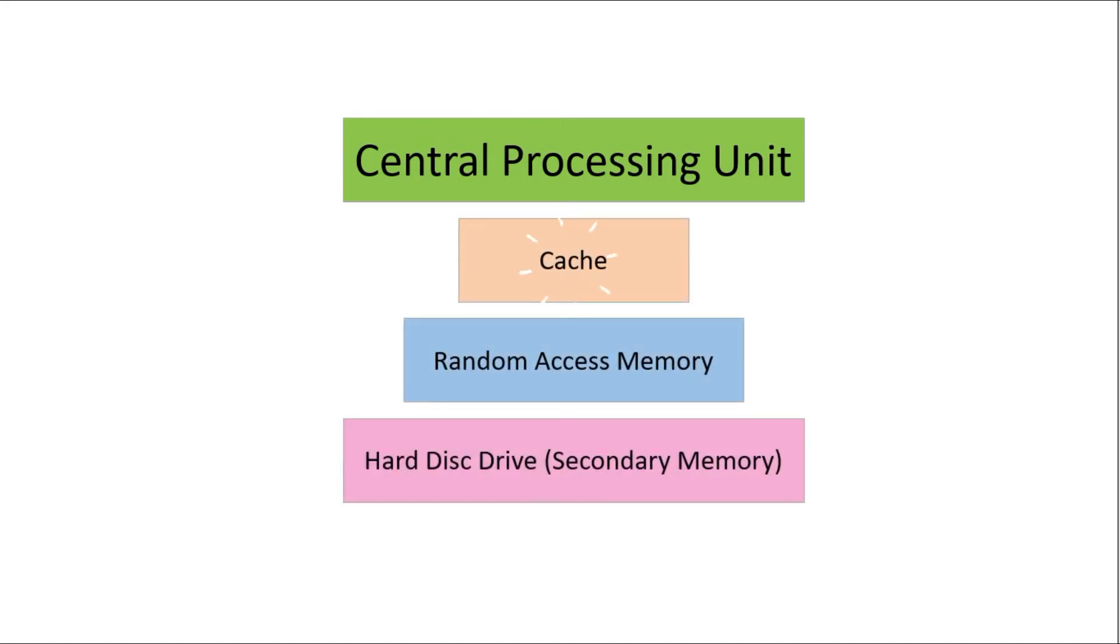There are three types of memory you need to be aware of: cache, RAM and secondary storage. Cache is the smallest amount of memory and this is usually found on the CPU chip or right next to it. It is closest to the CPU so therefore the data doesn't have so far to travel. It also uses very powerful technology but this is quite expensive so it can only hold very small amounts of data.